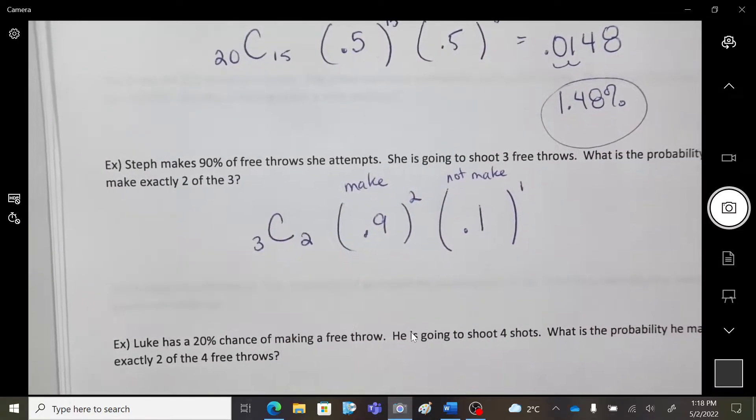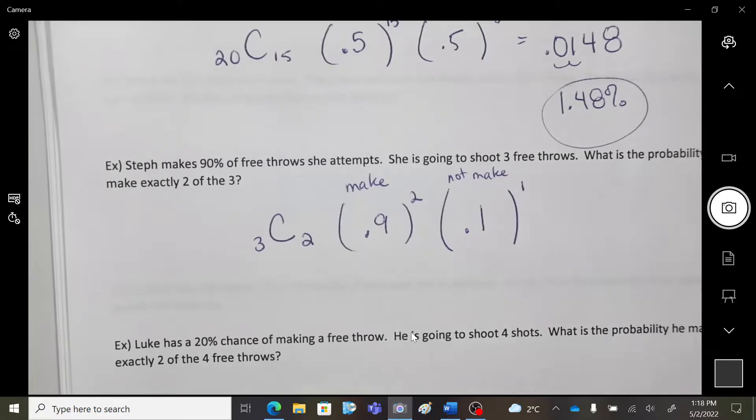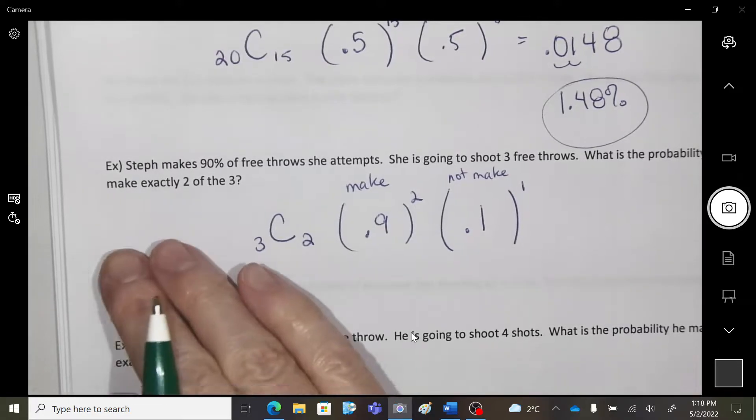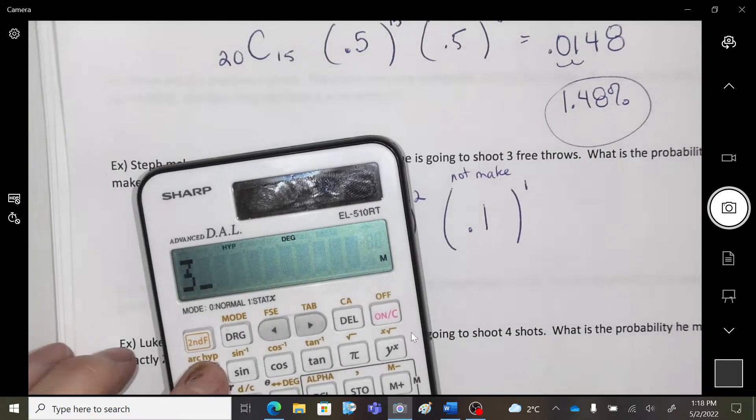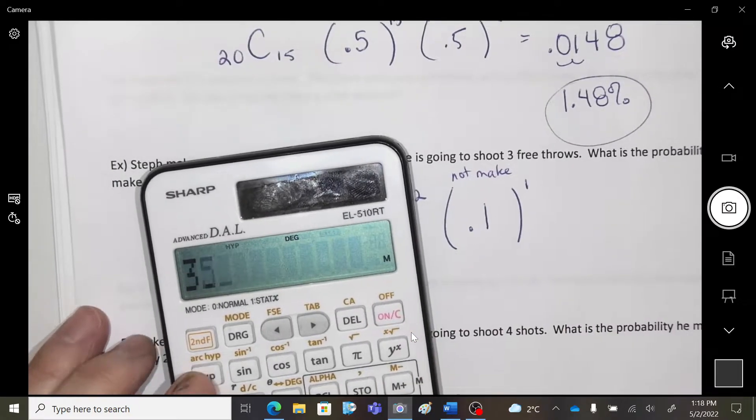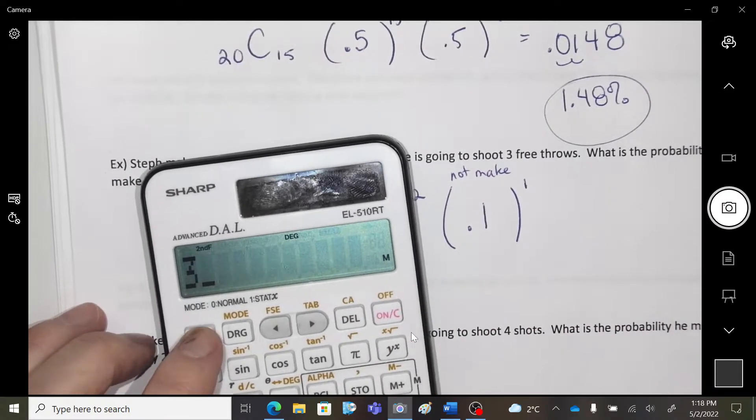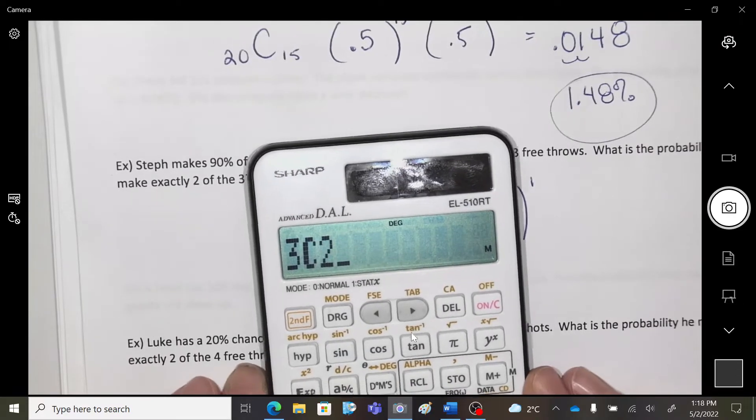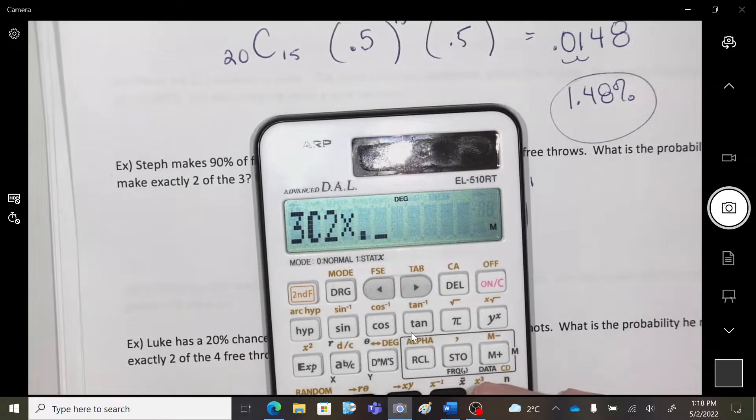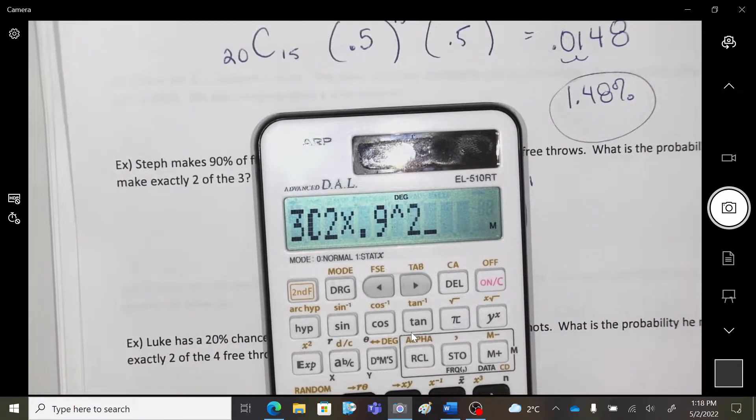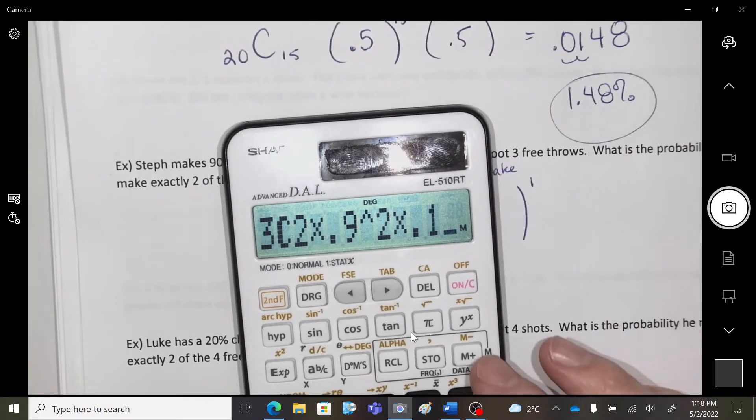And how many shots are we wanting to miss? We're going to have to miss one of them. Does that make sense? If you make two, you're going to miss one. Okay, and again, just times, times, times. 3 choose 2, times 0.9 to the 2, times 0.1 to the 1.